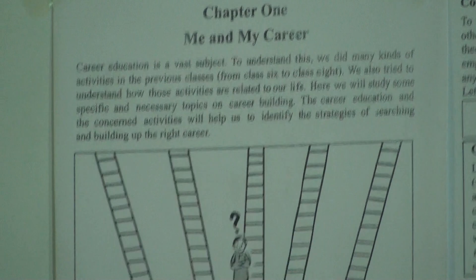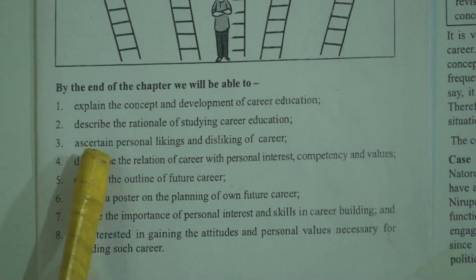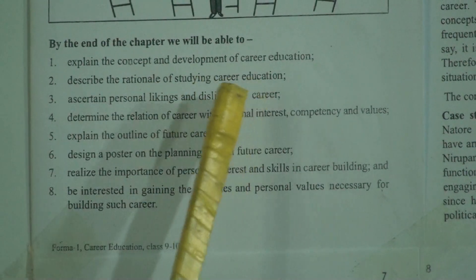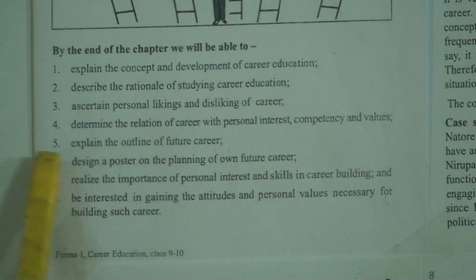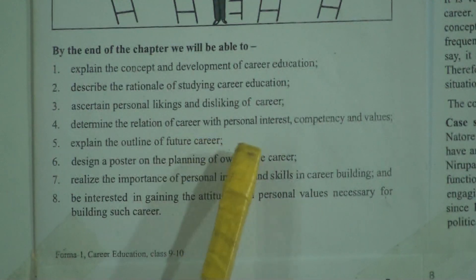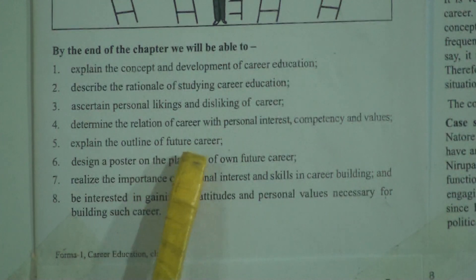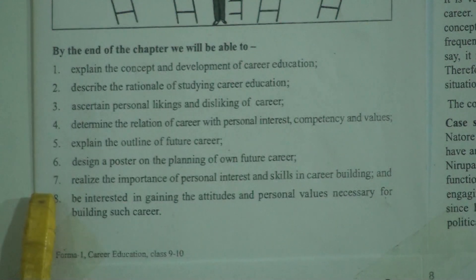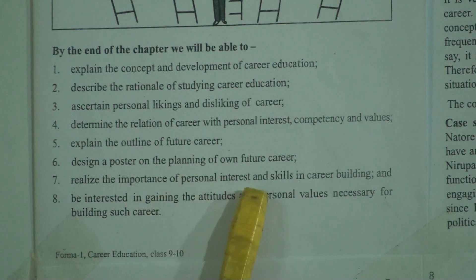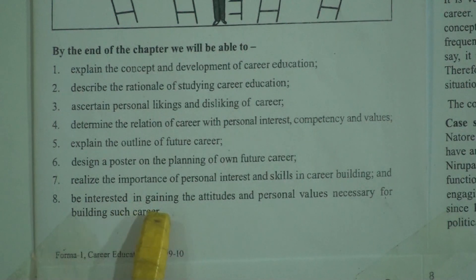By the end of the chapter, we will be able to: 1) explain the concept and development of career education; 2) describe the rationale of studying career education; 3) ascertain personal likings and disliking of career; 4) determine the relation of career with personal interests, competencies and values; 5) explain the outline of future career; 6) design a poster on the planning of own future career; 7) realize the importance of personal interests and skills in career building.